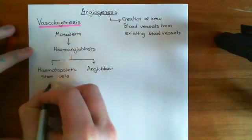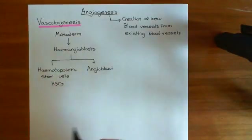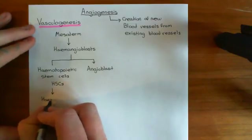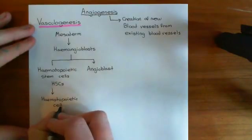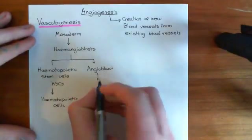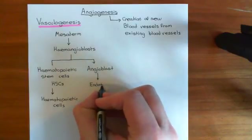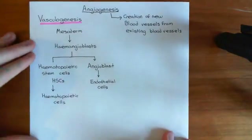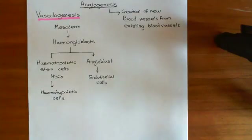Hemangioblasts can go two different ways: they can differentiate either into angioblasts or into hematopoietic stem cells (HSCs). The hematopoietic stem cells produce the cells of the blood, whilst the angioblasts differentiate into endothelial cells that actually create the blood vessels. Vasculogenesis is the name given to this de novo production of blood vessels within the embryo. Now we'll turn our attention to angiogenesis, which occurs in the adult body.